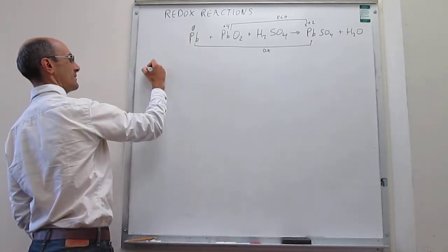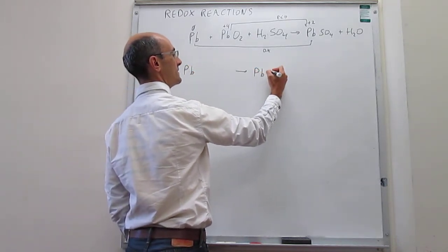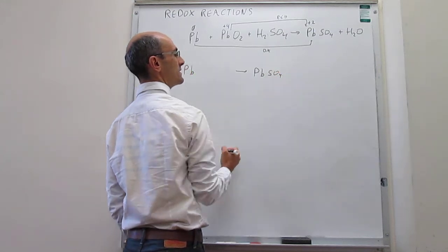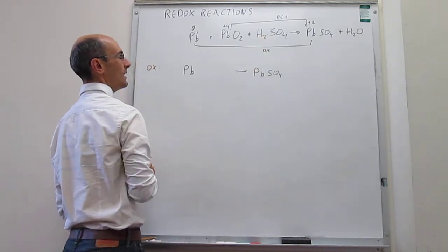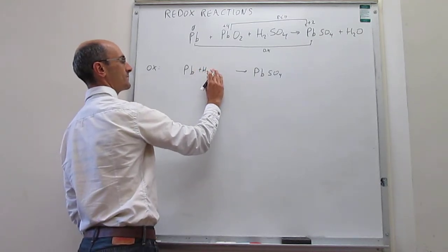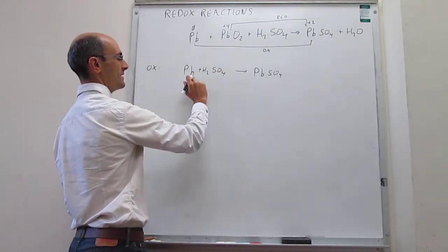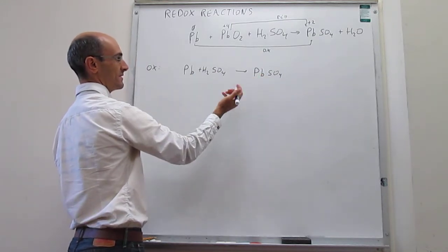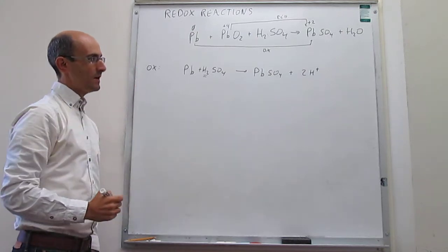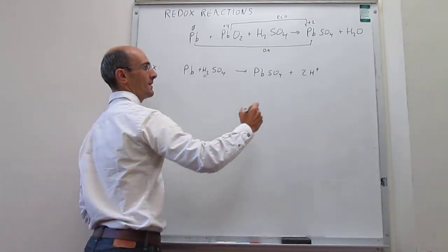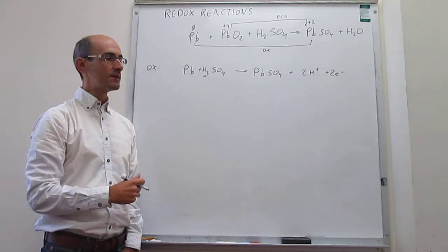Using the half-reaction method, the oxidation can be written as lead to generate lead sulfate. Notice that in order to balance the sulfate, we also need to include sulfuric acid in the reagents. The lead is balanced, sulfate is balanced, oxygen is balanced, so we only have to worry about the protons — we add two protons here. To balance the charge, we add two electrons. This is an oxidation reaction, so it makes sense that electrons appear in the products.